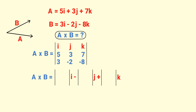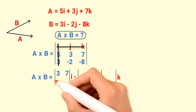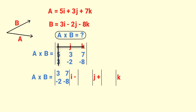For the I unit vector, which is in the first row and first column, cancel the first row and first column. What is left behind is 3, 7, minus 2, and minus 8. So we write this 2 by 2 matrix for the I unit vector: 3, 7, minus 2, minus 8.